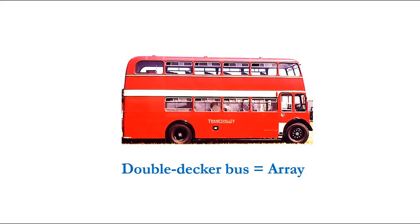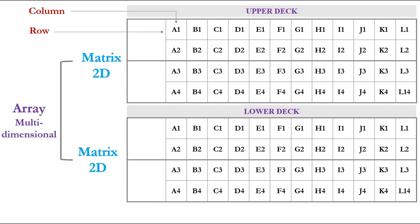To best describe arrays in a simple way, we are taking Double Decker Bus as an example. So here, if we think Double Decker Bus is an array, it has two matrices. The first matrix is the upper deck, and the second matrix is the lower deck. Each matrix will have 12 columns and 4 rows.